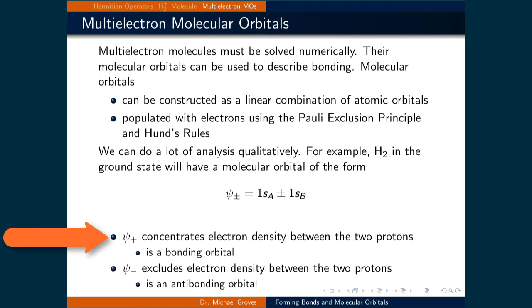Because the electron density is concentrated between the protons, it will be referred to as a bonding orbital. Psi minus excludes electron density between the two protons. This is due to destructive interference of the two waves that represent the electrons in the 1s orbitals. Because the electron density is excluded between the protons, it is referred to as an antibonding orbital.